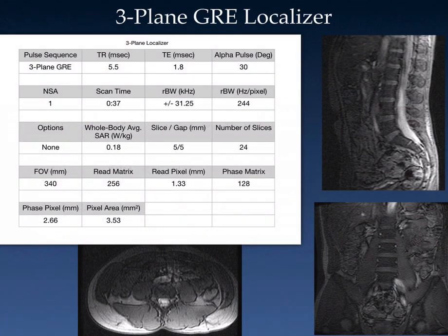Let's start with the three-plane gradient echo localizer — nothing fancy here, just a three-plane gradient echo localizer with right out of the box parameters. Two important factors: the whole body SAR is extremely low at 0.18 watts per kilogram, and the scan time was just 37 seconds.